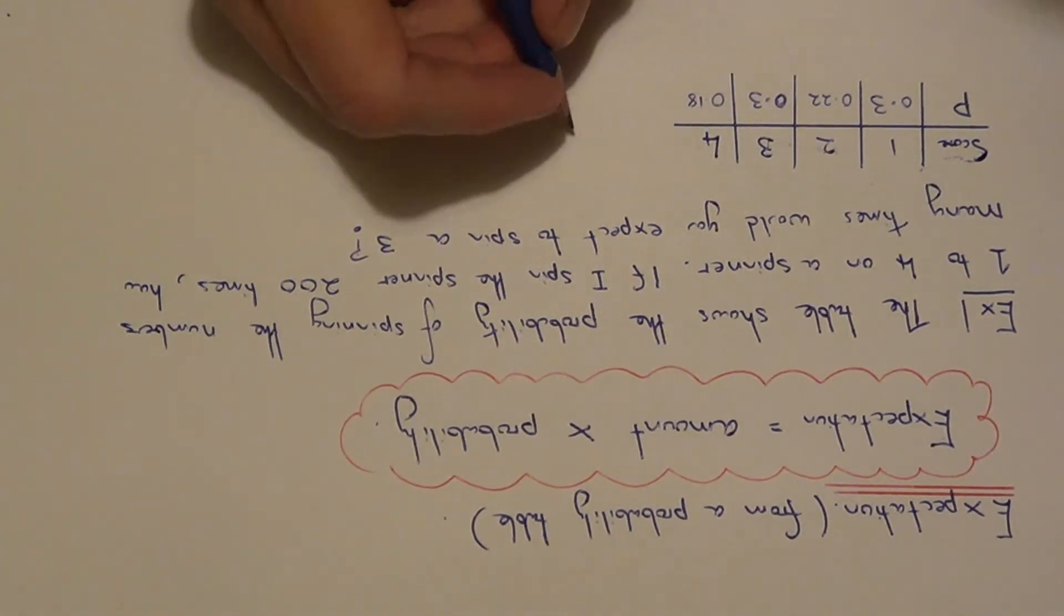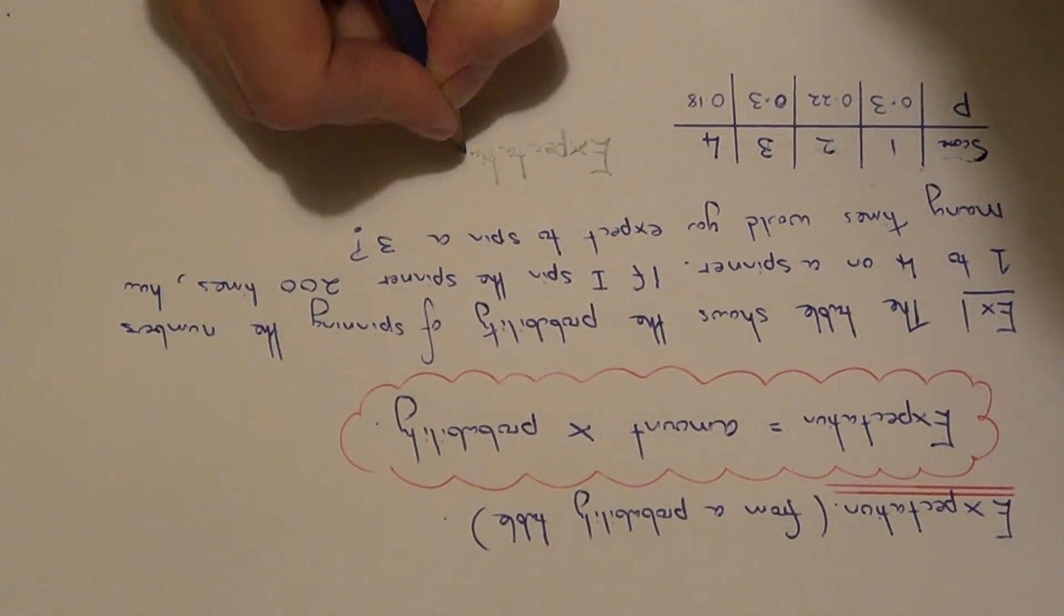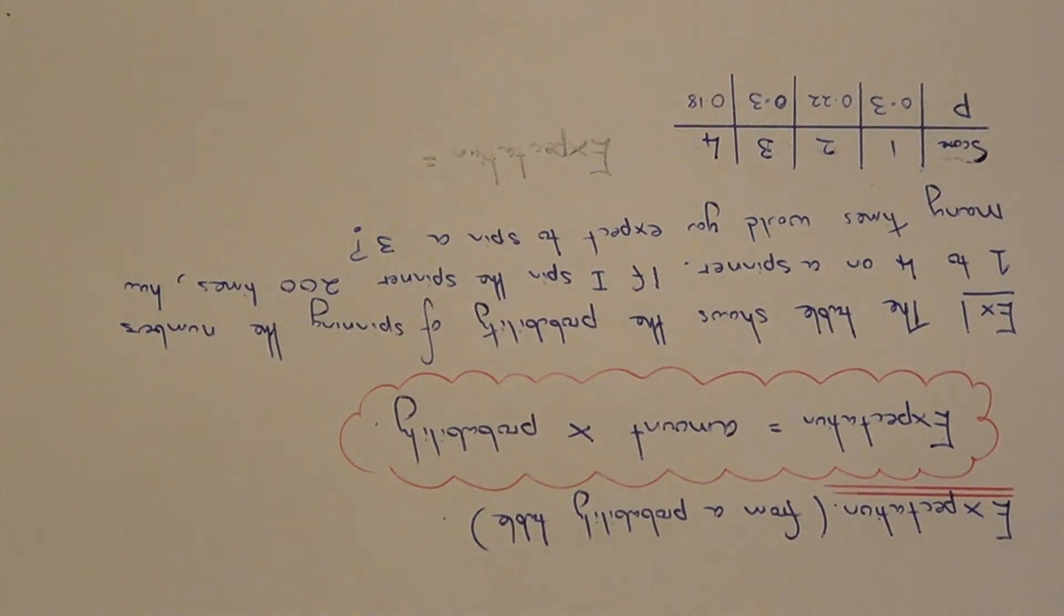So if we use our formula above to get the expectation, we just need to multiply the amount of times we are doing it by the probability.